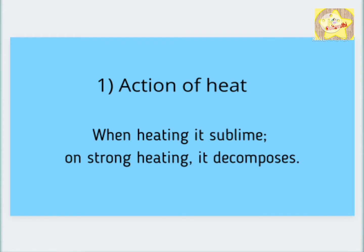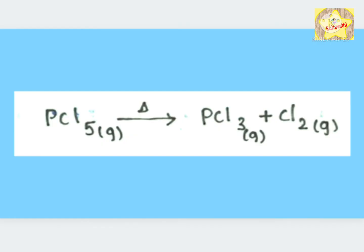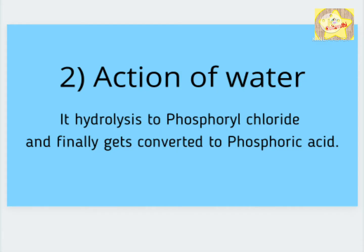The action of heat. When phosphorus pentahalide is heated, it sublimes, which means the solid substance changes directly into vapor when heating. But on strong heating, it decomposes.